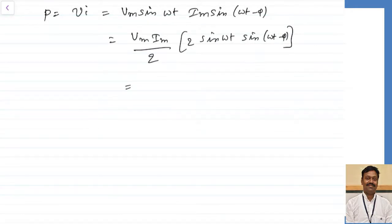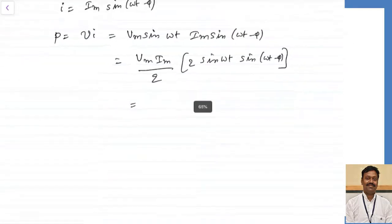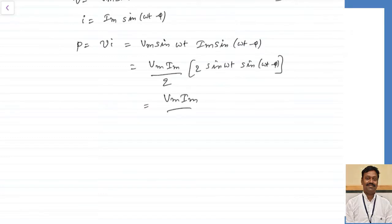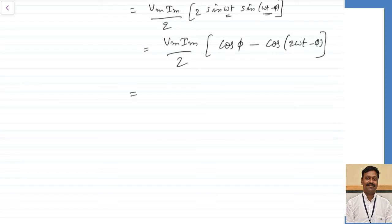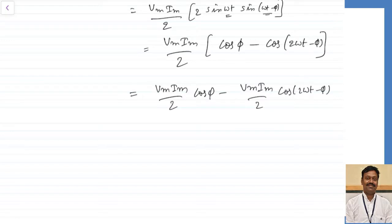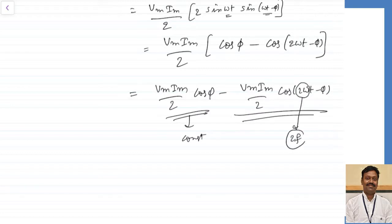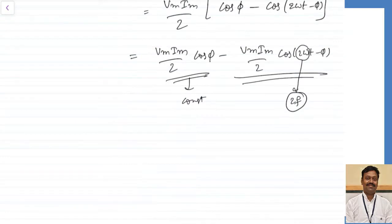Using the identity 2·sin(a)·sin(b) = cos(a − b) − cos(a + b), I can write p = (Vmax · Imax / 2) · [cos(φ) − cos(2ωt − φ)]. The first term is a constant and the second term oscillates at twice the frequency — meaning in one half cycle it completes one full cycle.